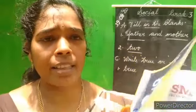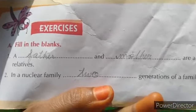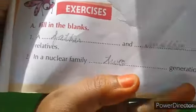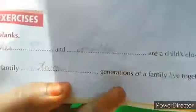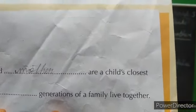Now take your book, page number 13. Fill in the blanks — book back exercise. First one: Father and mother are the child's closest relatives. Father: F-A-T-H-E-R. Mother: M-O-T-H-E-R.